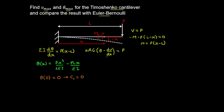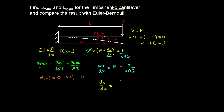We rearrange the shear equation to obtain dv/dx, dividing through to get: dv/dx equals theta minus P / (κAG). Substituting for theta, we obtain: dv/dx equals px² / 2EI minus PLx / EI minus P / (κAG).